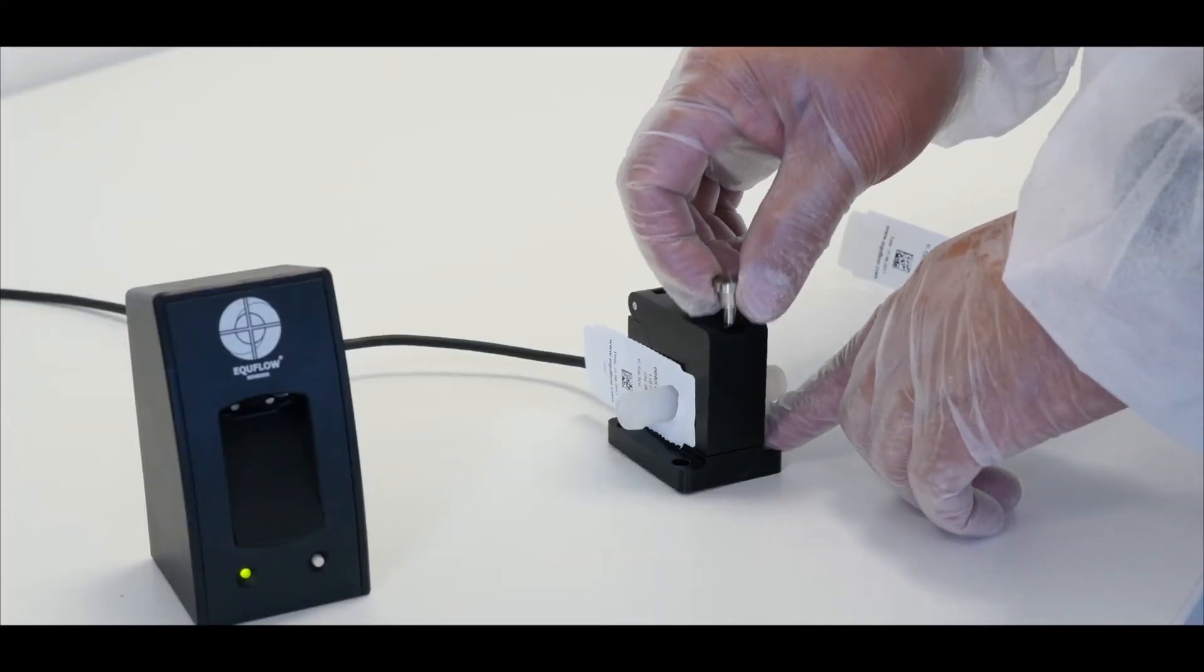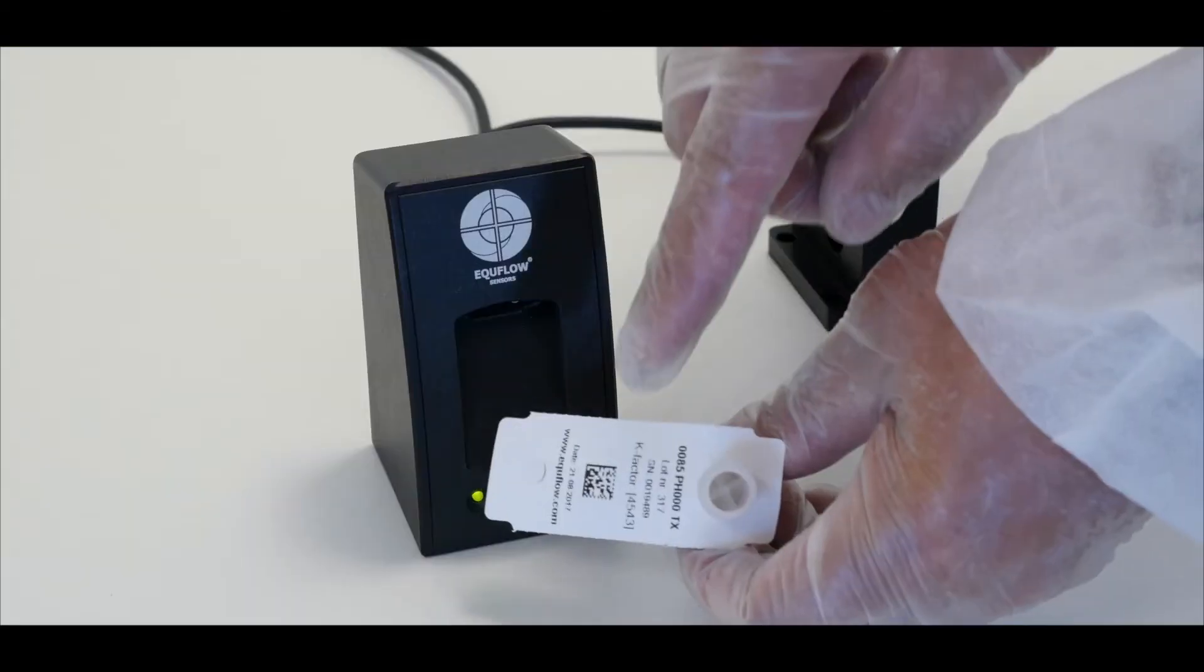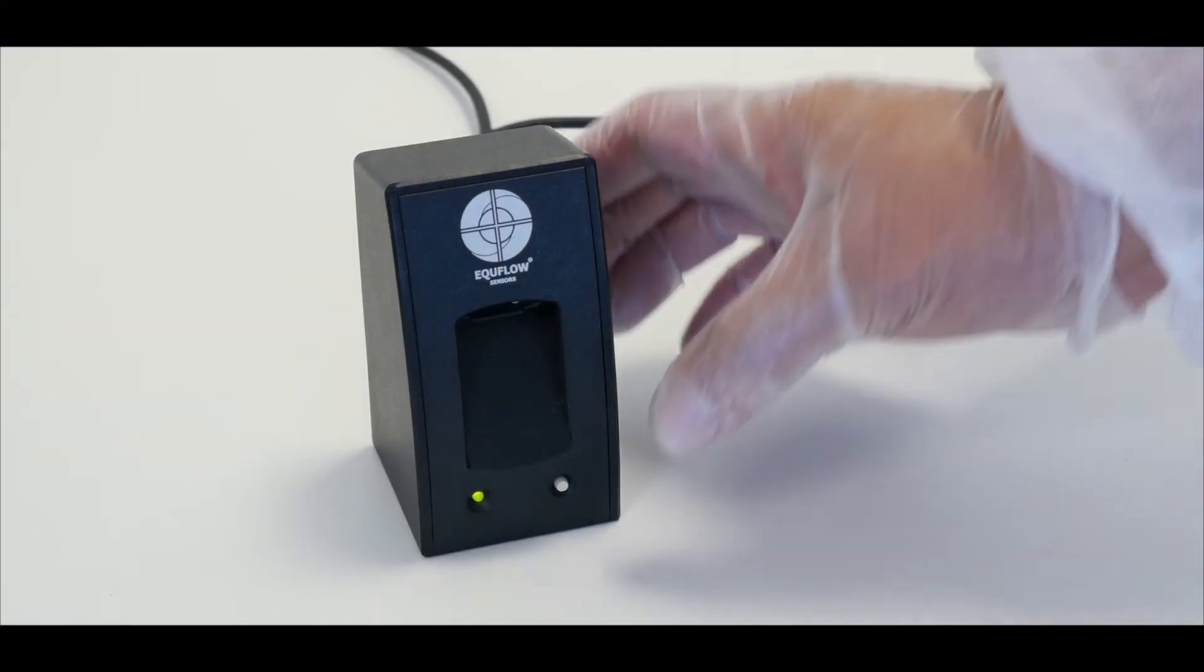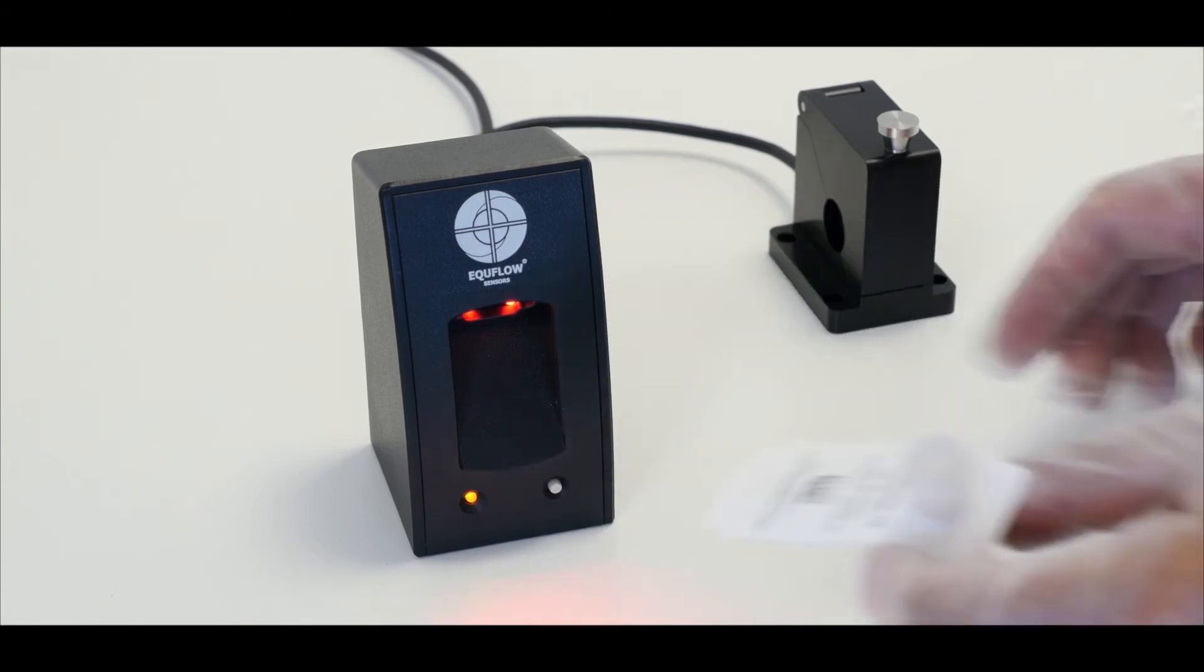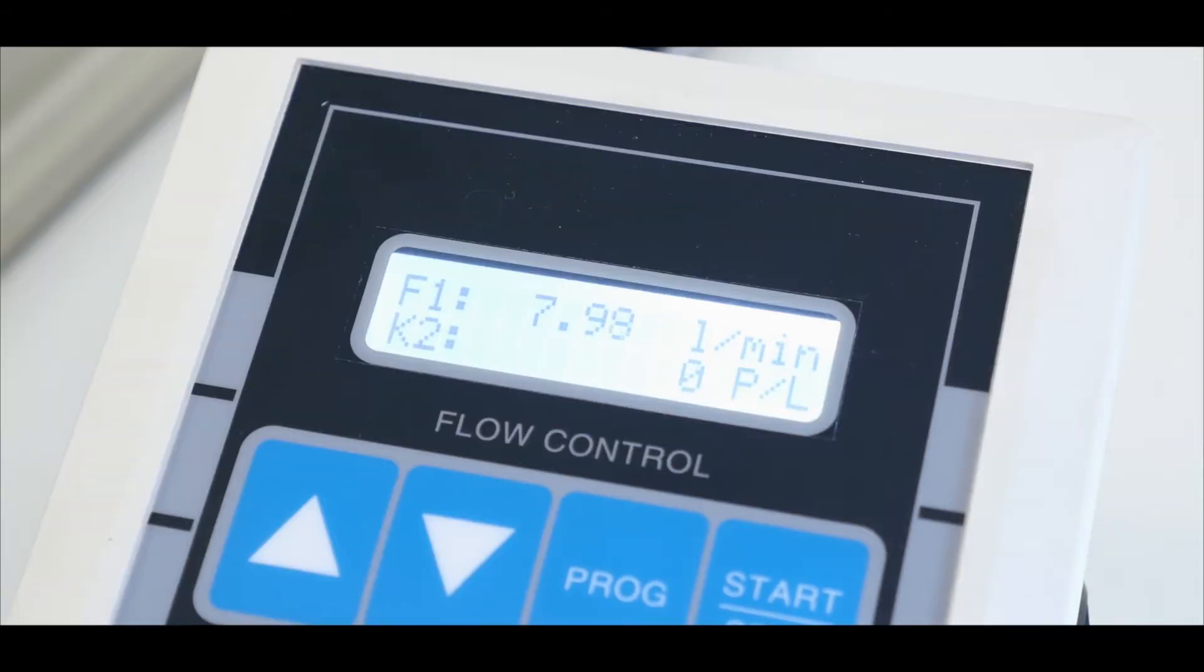Exchanging the flow tube can be done within seconds. Scanning the barcode makes the calibration process unnecessary after exchanging a flow tube and guarantees an accurate flow measurement.